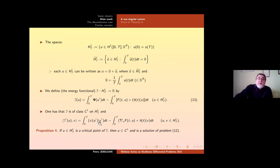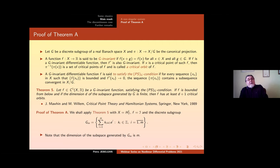To the non-singular problem, one has that this I is of class C^1 on H^1_T and this is its derivative. One can prove that if u is a critical point of I then u is C^1 and is a solution of our problem 12 here. By the way, the solution of problem 9, problem 9.